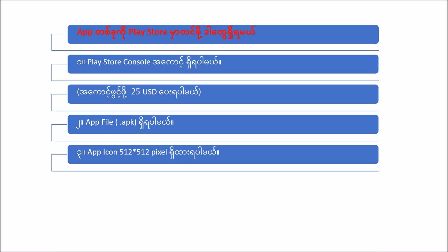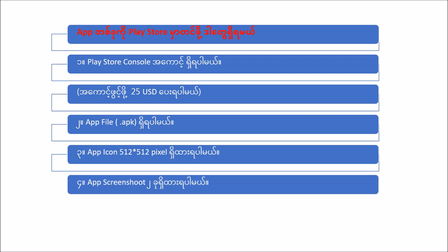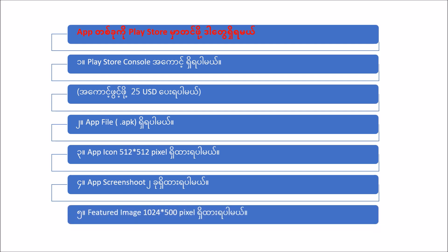The application icon should be 512 by 512 pixels. Application to Google Play Store — my team will be seamless channel of your video.